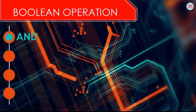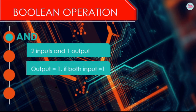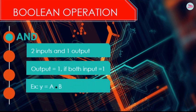Let's move to the first Boolean operation which is AND. AND Boolean operation consists of two inputs and one output. The output will be one if both the input A and B are also one. For example, Y equal to A and B where the Boolean symbol for AND is a center dot.